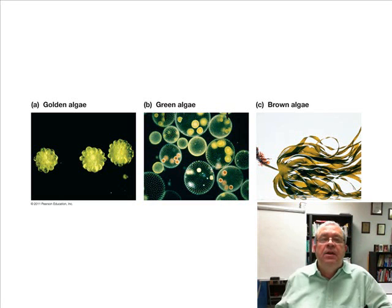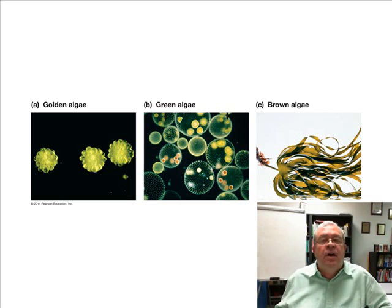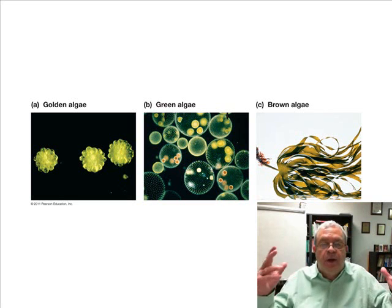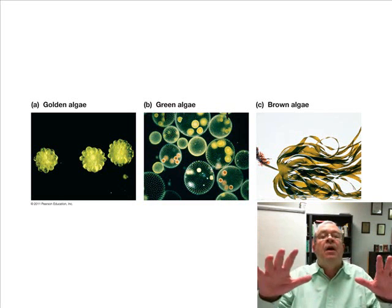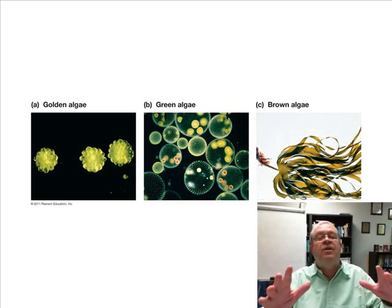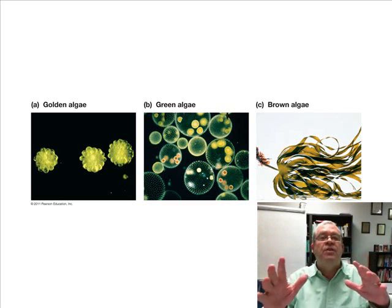There was a question many units ago: into which kingdom are all algae placed, including seaweed? The answer is that all algae are now placed in Kingdom Protista, including seaweed. Were seaweed in Kingdom Protista 30 years ago? No — they were plants, but now they're protists due to a definition change. So all algae are now protists by definition, and on the flip side, all photosynthetic protists are some kind of algae.